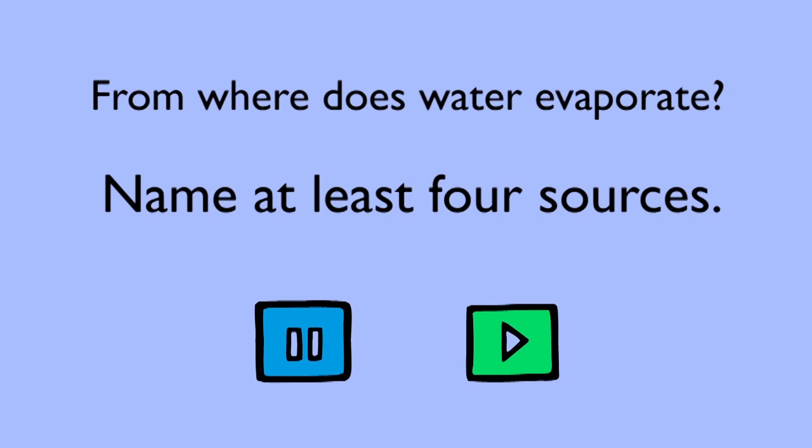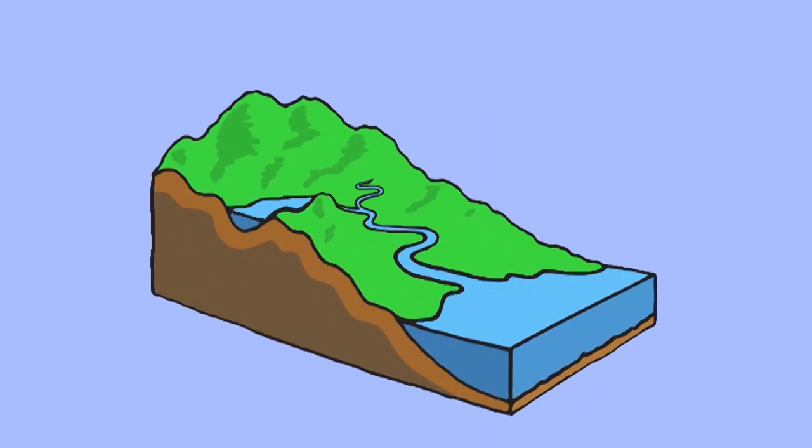Some correct answers include any body of water, from a puddle to a pond, from a pond to a lake, from lakes to rivers and from rivers to seas. All of these act as bodies of water that can be evaporated.